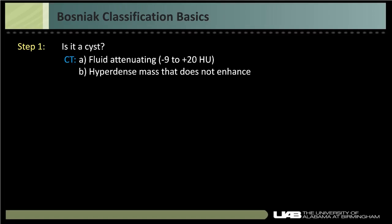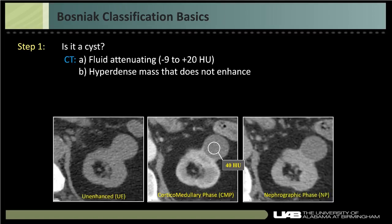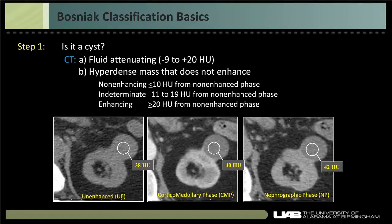Enhancement is defined as 20 Hounsfield units or greater increase from the non-enhanced phase. Non-enhancing is 10 or less, and indeterminate is 11 to 19 Hounsfield units. When indeterminate, we recommend an additional study such as contrast MRI or contrast-enhanced ultrasound.